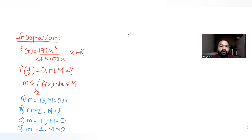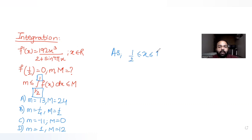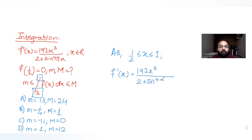Let's understand how to solve this type of integration question. The limits of f(x) go from 1/2 to 1, so x lies between 1/2 and 1. Using this, I can apply the idea of f'(x), which is 192x³ divided by (2 + sin⁴(πx)), and substitute x = 1/2 and x = 1 to get the limits of f'(x).